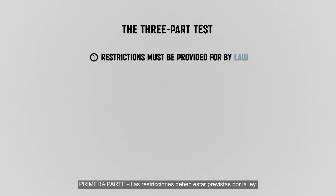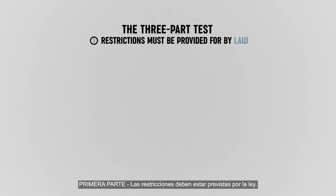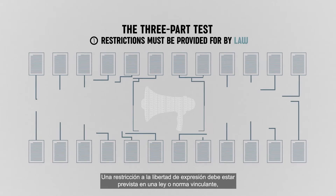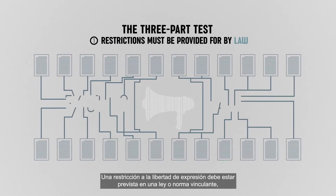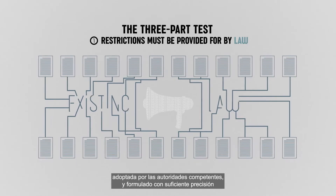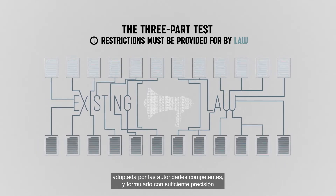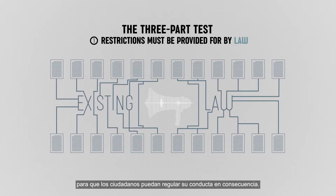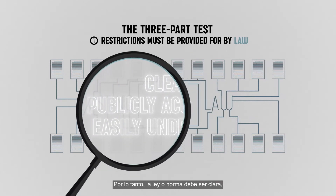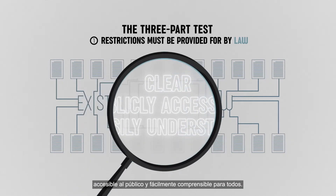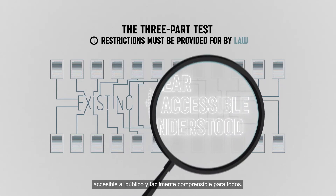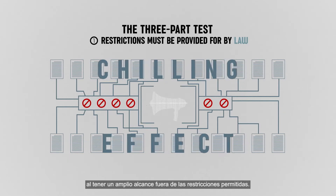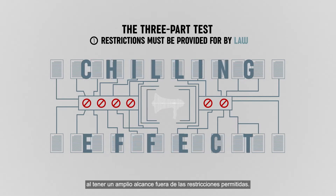Part 1: Restrictions must be provided for by law. A restriction to freedom of expression should be provided for by a prior existing law or binding norm, adopted by competent authorities, and which is formulated with sufficient precision to enable citizens to regulate their conduct accordingly. The law or norm must therefore be clear, publicly accessible, and easily understood by everyone. Otherwise, it would risk having a chilling effect on free speech by broadening the scope of permissible restrictions.